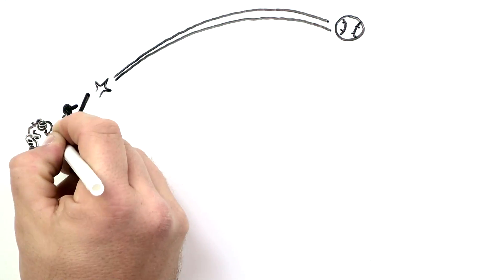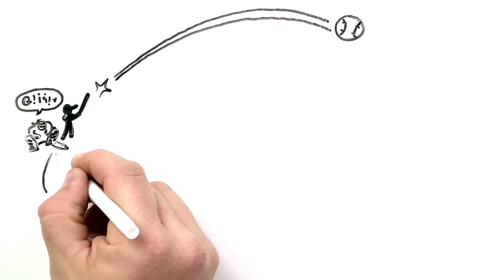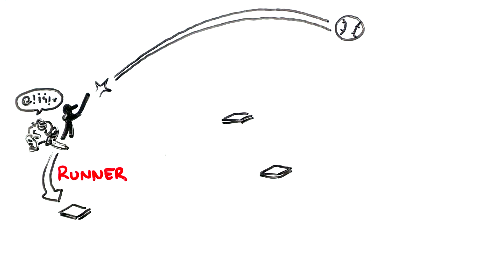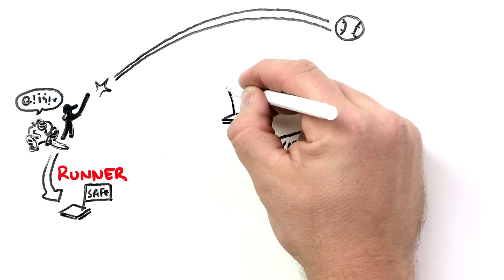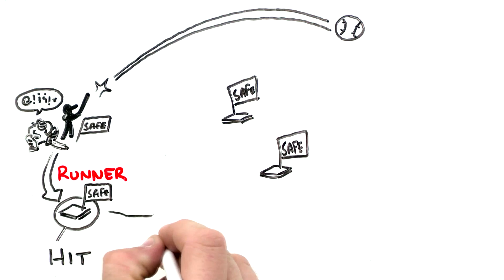When the batter hits the ball into the field of play, the batter is then referred to as a runner. A batter gets a hit when he reaches a base without getting out or forcing another runner to get out. He runs from home base to first base. There are three more bases that he has to run.